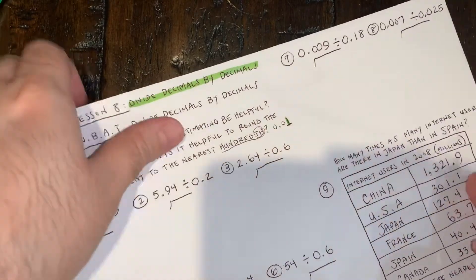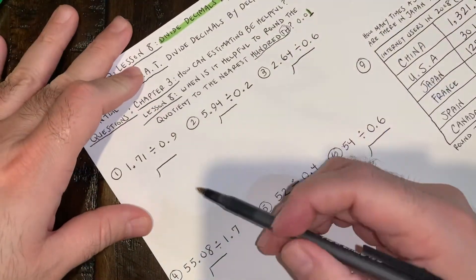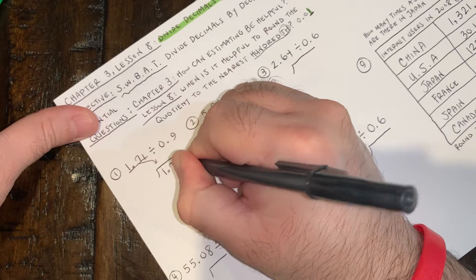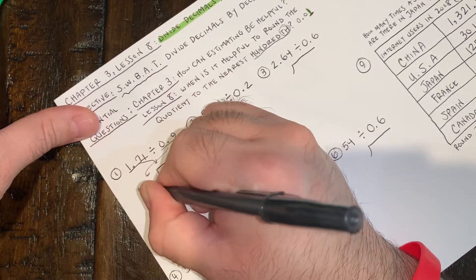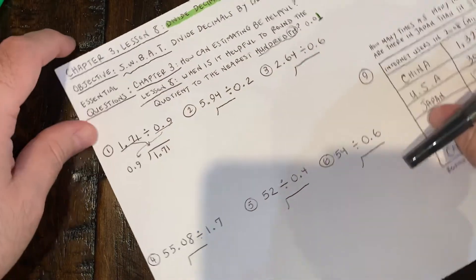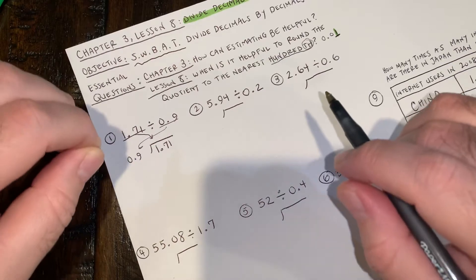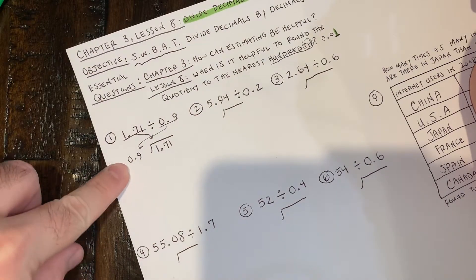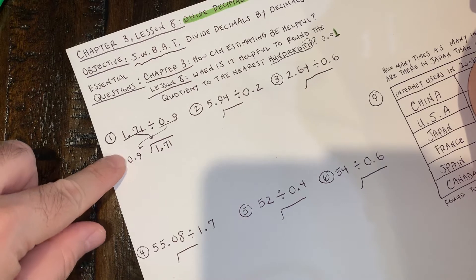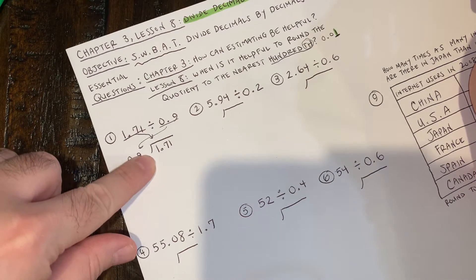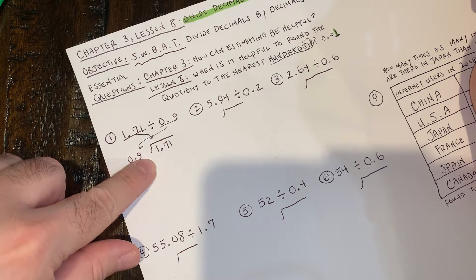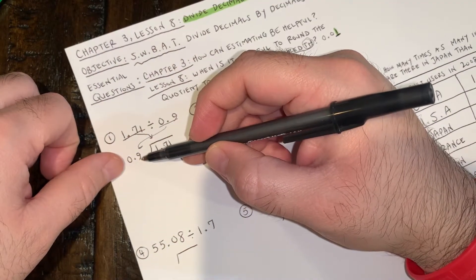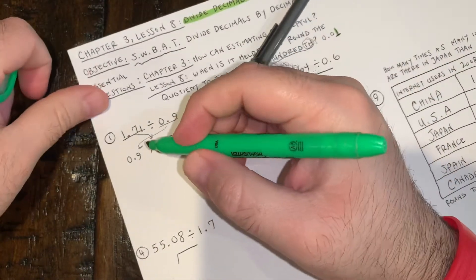Let's jump into division. Based on our last lesson, remember that the first number goes on the inside: 1.71. The second number goes on the outside: 0.9. Here is the most important thing about this lesson — the outside number can never be a decimal. Never. So what you're going to have to do is move your decimal to the right however many times it takes until it's no longer a decimal, changing it into a whole number.